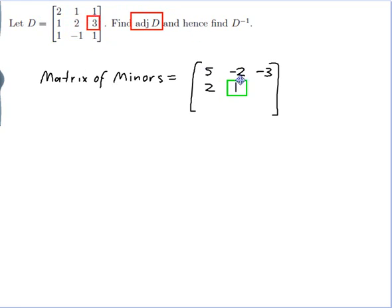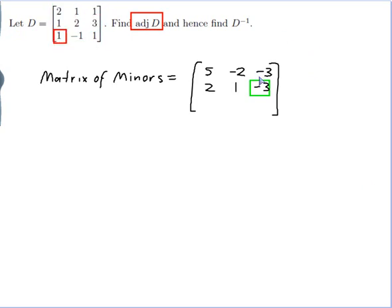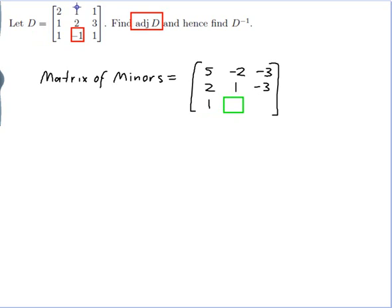I move on to the next entry of D and the minor will go in the next entry of the matrix of minors. I cross out the row and column that I am in: 2 times −1 minus 1 times 1 gives −3. Next entry: 1 times 3 minus 2 times 1 gives 1. Next: 2 times 3 minus 1 times 1 is 5.